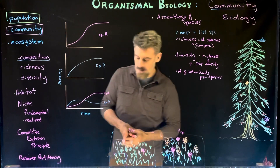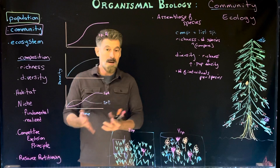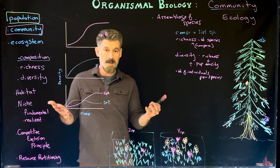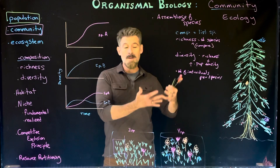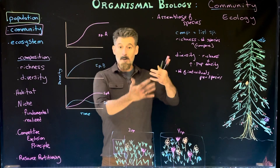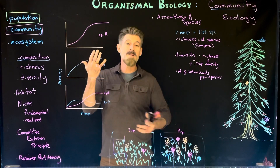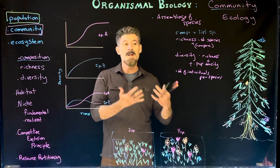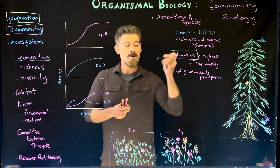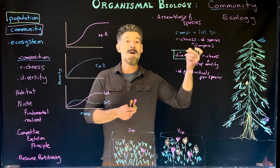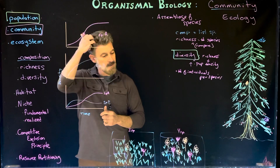Generally, richness and diversity refer to something similar — the number of species in an area. But with diversity we also consider whether the organisms present are equally abundant or whether one dominates and others have only a few individuals. That's what diversity really captures: both number of species and number of individuals together.